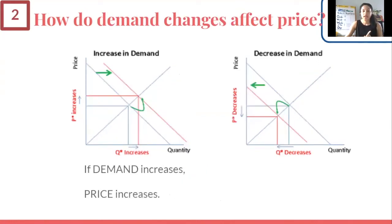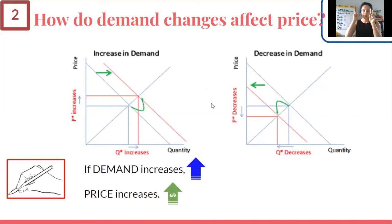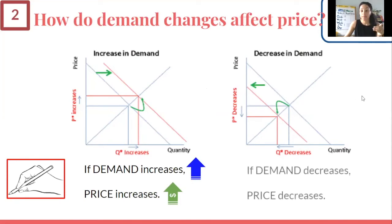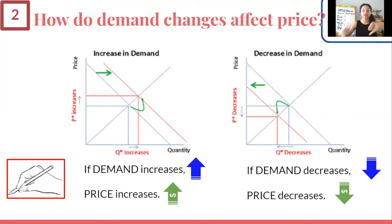Demand is a little different. If demand increases and the demand line shifts up, price increases. If demand increases, price also goes up. And if demand decreases, price also decreases. So demand and price have a direct relationship — when one goes up the other goes up, when one goes down the other goes down. Copy down those key things: demand increase → price increase; demand decrease → price decrease; supply increase → price decrease; supply decrease → price increase.